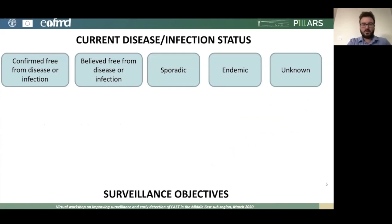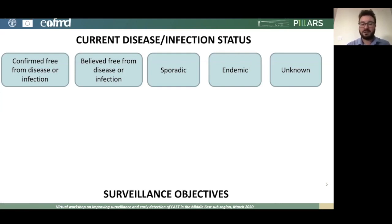On this slide, I've created the different disease or infection status categories. It might be unknown — you just don't know what disease status you have. It might be endemic, meaning it's continually present. It might be sporadic, with intermittent or irregular outbreaks. You might believe you're free from disease or infection, or indeed you might be confirmed free of disease or infection. For each of these different categories, you might have different surveillance objectives.